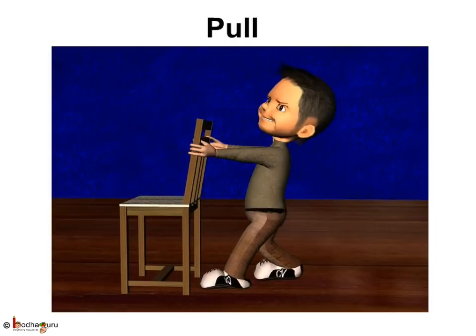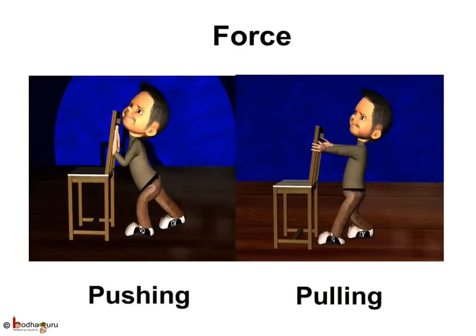Similarly, if you want to move the chair towards you, you have to make an effort to pull it towards you. This effort to push or pull is called force. You cannot move an object without using force — force is needed to pull or push something. For example, you cannot push a ball without using force. To move a light object like a pencil when writing, you have to use less force, and to move a heavy object like a table, you have to apply more force.